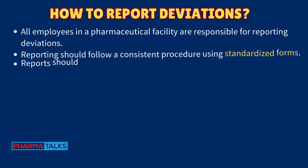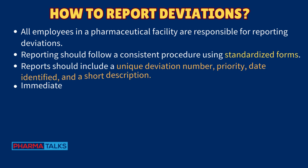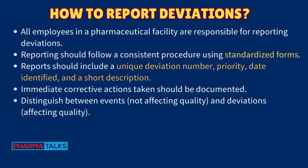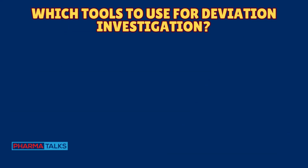Proper management of deviations involves detailed logging and tracking. All employees in a pharmaceutical facility are responsible for reporting deviations, and reporting should follow a consistent procedure using standardized forms. Reports should include a unique deviation number, priority date identified, and a short description. Immediate corrective actions taken should be documented, and it is important to distinguish between events not affecting quality and deviations that do affect quality.